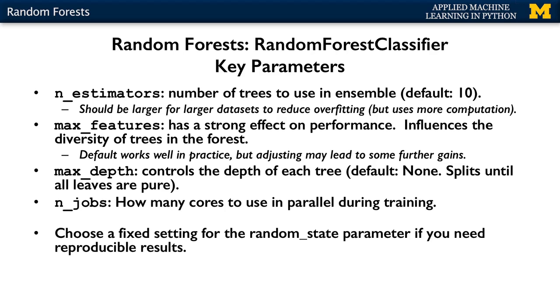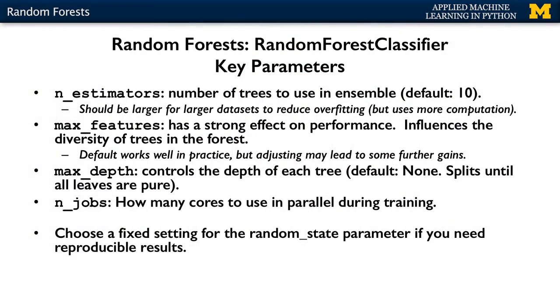The max_features parameter has a strong effect on performance and a large influence on how diverse the random trees in the forest are. Typically, the default setting — which for classification is the square root of the total number of features, and for regression is the log base 2 of the total number of features — works quite well in practice, although explicitly adjusting max_features may give additional performance gain, with smaller values tending to reduce overfitting.